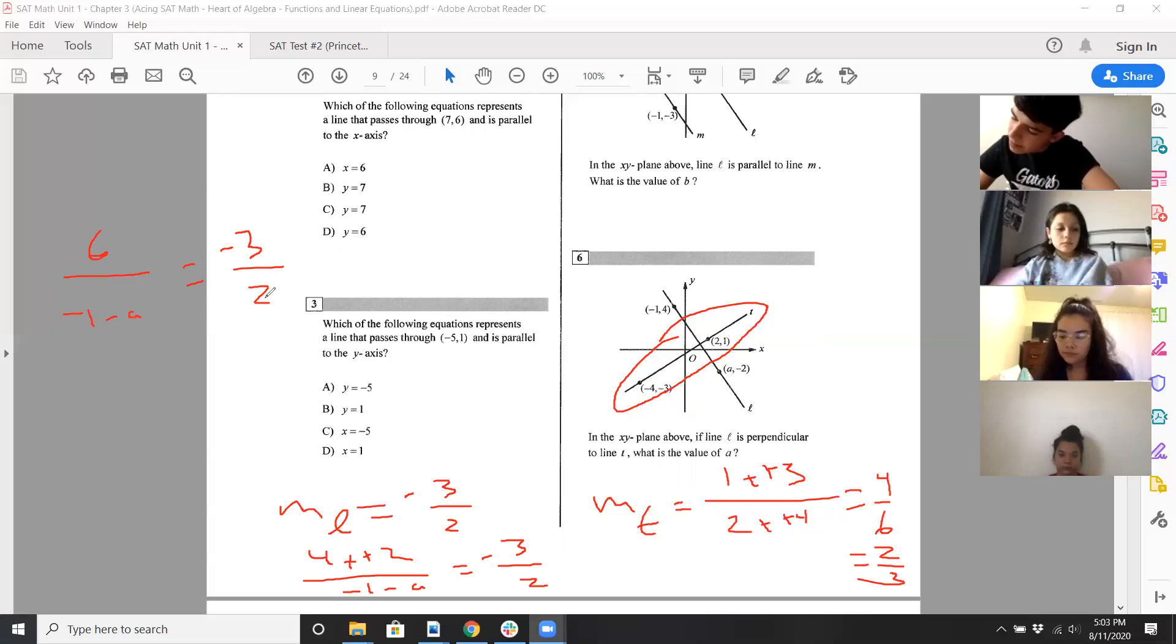So you set them equal to each other. You go, or you keep, I mean, we did obviously, but you just keep going here. To get twelve equals three, come on. Three plus three a, cause you're doing negative three times a, one times a of a. Three a equals nine, a equals three.